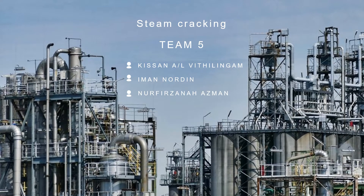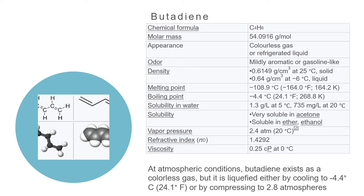Good day to Dr. Zaki and fellow friends. Today, we are from Team 5 and will be presenting about steam cracking. Here we have listed the chemical and physical properties of butadiene. At atmospheric conditions, butadiene exists as a colorless gas, but it is liquefied either by cooling to negative 4.4 degrees Celsius.